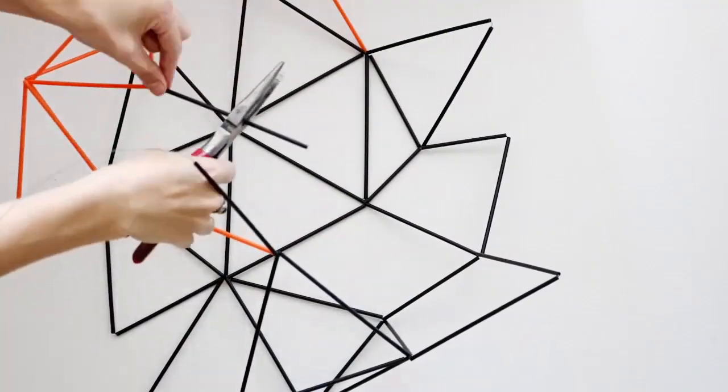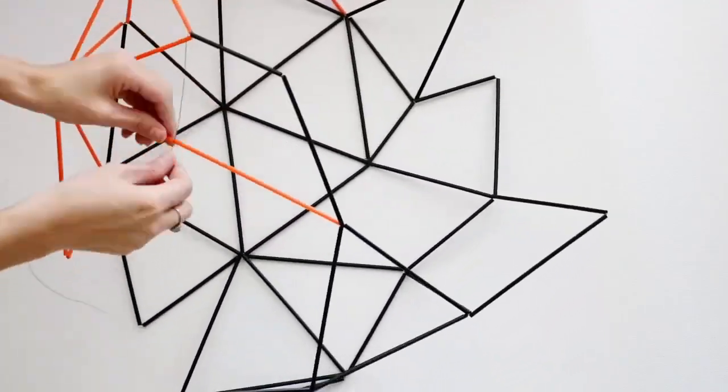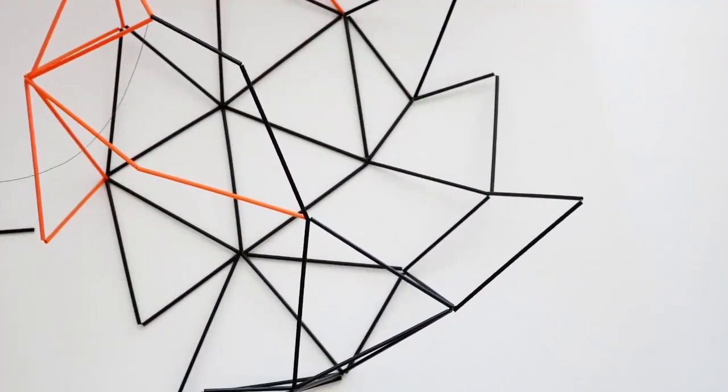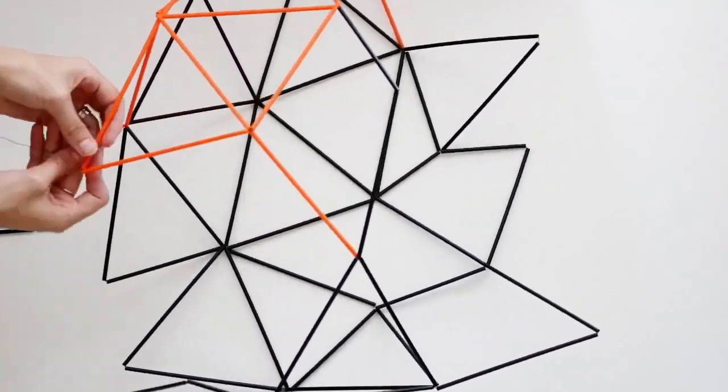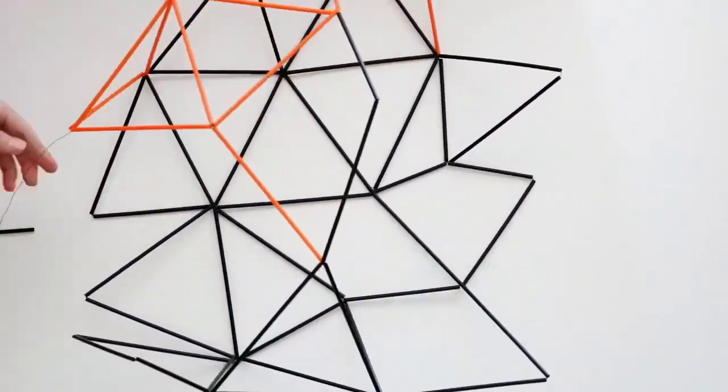Once you connect your ends, keep connecting the rest of your loose triangles and bring the whole thing together. You might need to add a few more sticks in random spots once you have your overall shape.